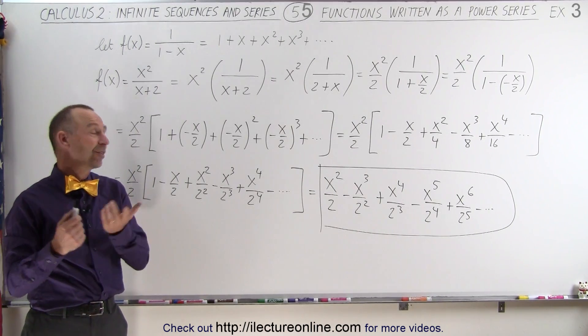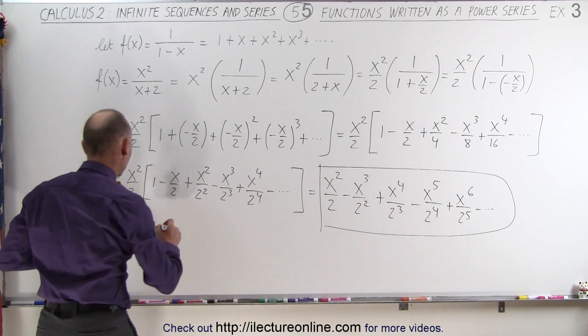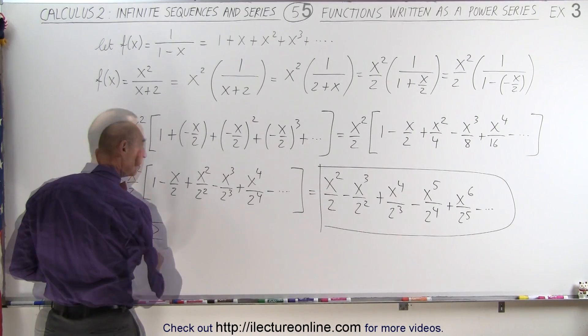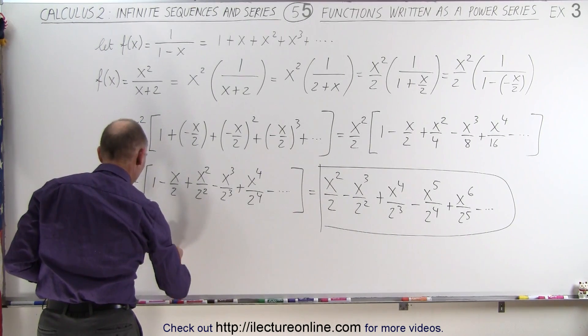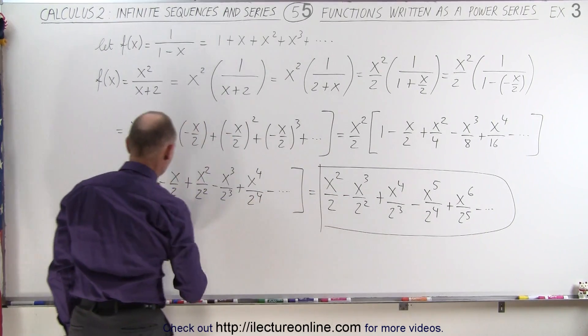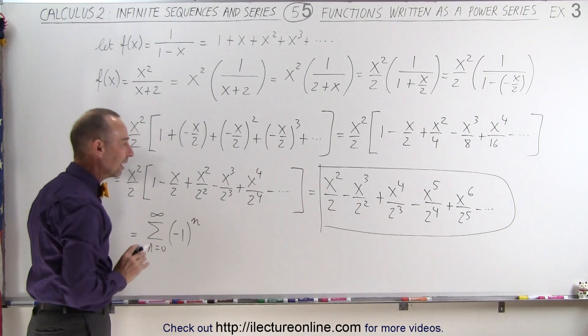For those who are interested in seeing what this may look like with infinite summation notation, this could be written as the infinite sum going from n equals 0 to infinity. We need to take care of the negative signs, so we have a minus 1 to the n power that takes care of the negative signs.